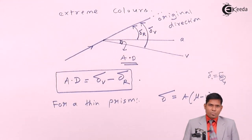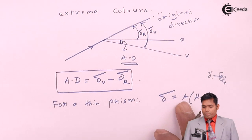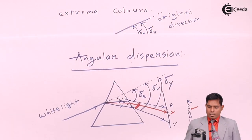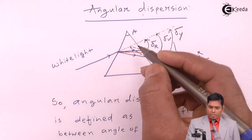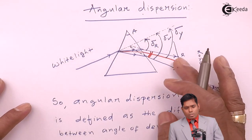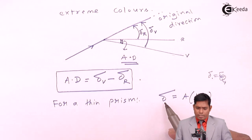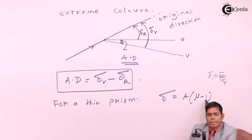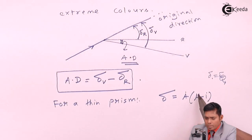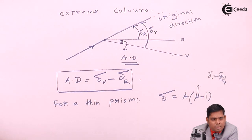For different colors, δ is different. Why different? Because A, the angle of the prism, is the same for all colors — it is not going to change when different colors pass through the prism. So for all colors from V to R, A is the same. Then why is δ different? Because δ = A(μ − 1), A is constant and 1 is constant, which means μ, the refractive index, is different for different colors when passing through a prism.